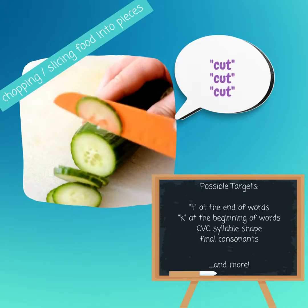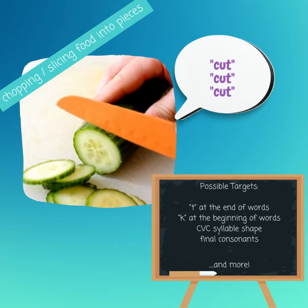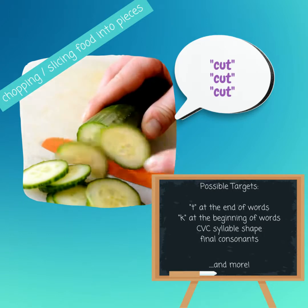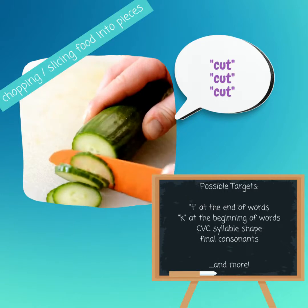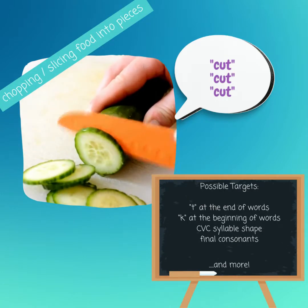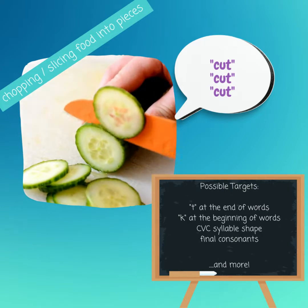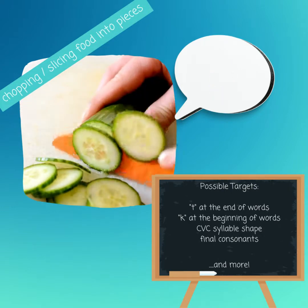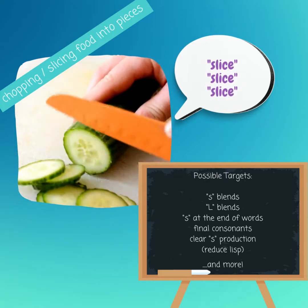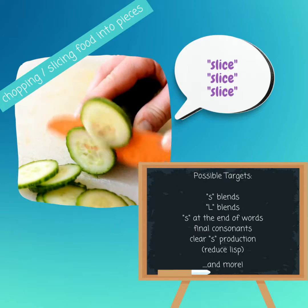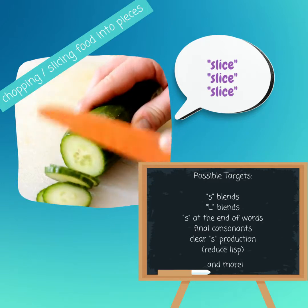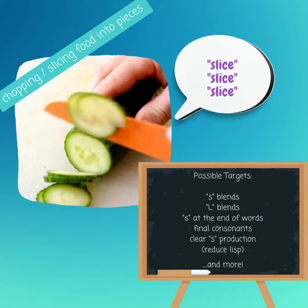But for somebody else doing the exact same activity, they might be saying the word 'cut' because their targets could be T at the end of words or K at the beginning of words, or CVC syllable shape and final consonants. Or we may be saying 'slice' because we're working on S blends or L blends or S at the end of words or final consonants or clear S production to reduce a lisp. So many different options — same activity, different targets.